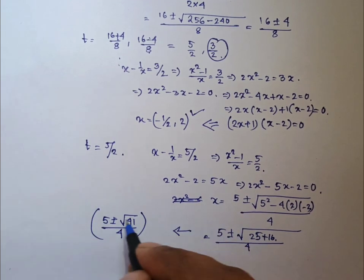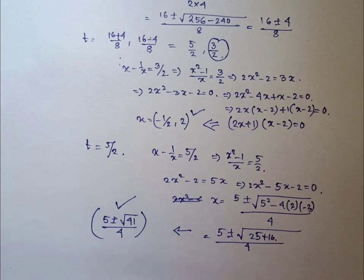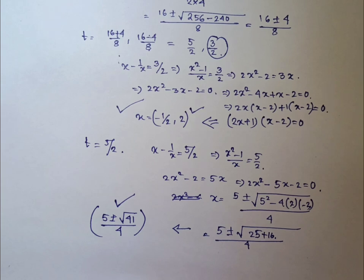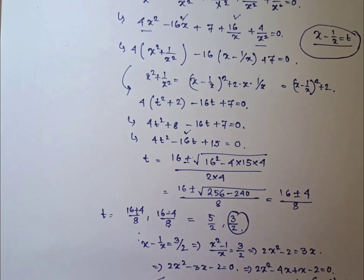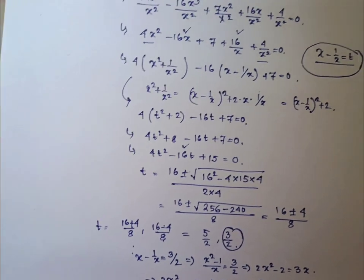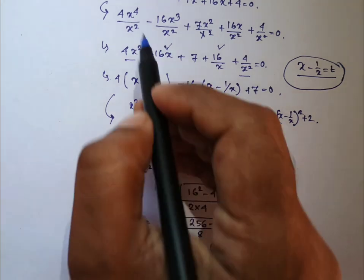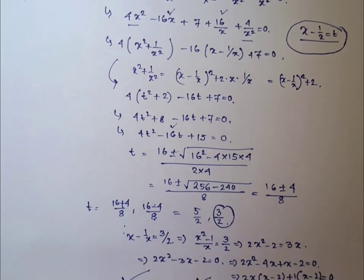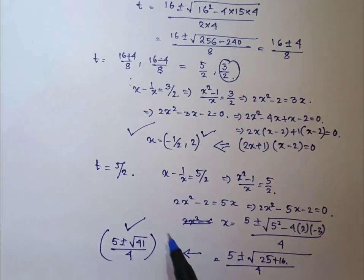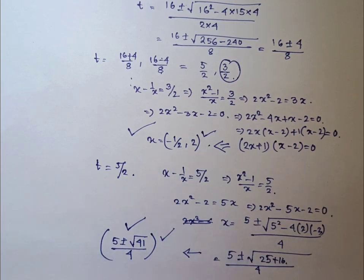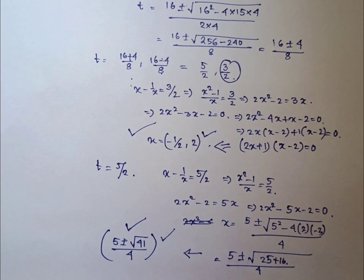So these are two values for x. And already we have got two values from the first case. The main problem that we were given was basically a 4th degree equation of x, because we have the highest degree as x to the power 4. So x must be having four values — two values from the first case and two values from the second case. If you like this video, I request everyone to watch and subscribe to my channel, and watch other videos as well.